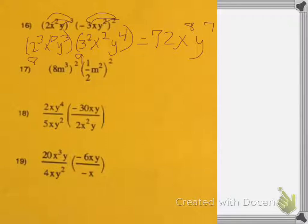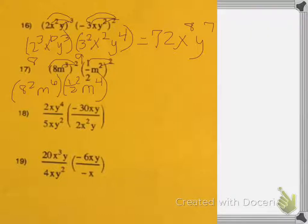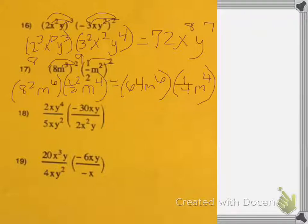Number 17. We have to distribute again. So you get 8 squared, n to the 3rd times 2 is 6. Then you get 1 half squared, n to the 2 times 2 is 4. Then 8 squared is 64, so you get 64 n to the 6th. And 1 half times 1 half multiplying across will be 1 fourth, n to the 4th. Then multiplying across, you can reduce 4 into 64, and that gives us 16. And then n to the 6th times n to the 4th — you're going to add the exponents — n to the 10th. Final answer.